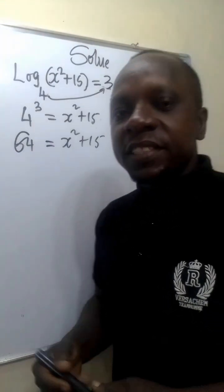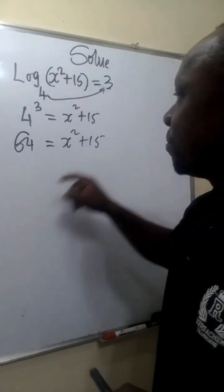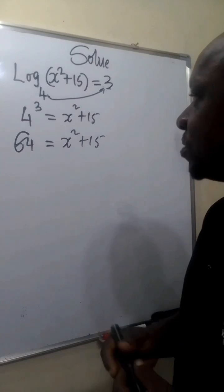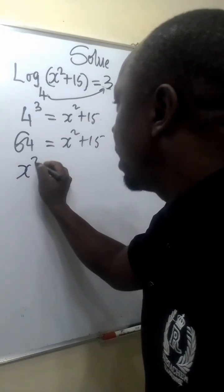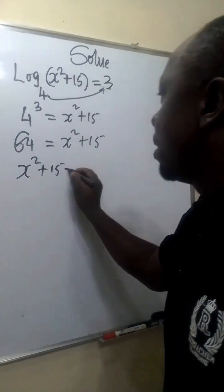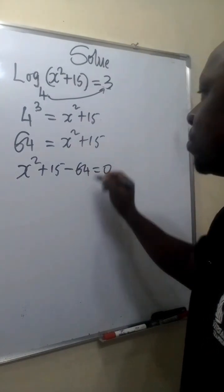This is a quadratic equation. We move 64 to the other side to become minus 64. So this becomes x squared plus 15 minus 64 equals 0.